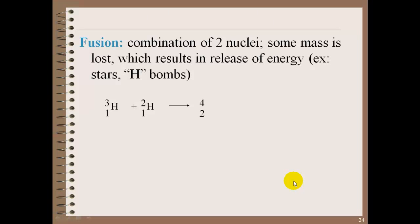Then finally, fusion. Fusion is actually the combination of two nuclei, so some mass is lost, which results in a release of energy. We're going to combine two nuclei, mass is lost, energy must be released. So we take hydrogen-3 and hydrogen-2, try to fuse them together to form helium. And in doing that, we release a neutron, and we release energy.